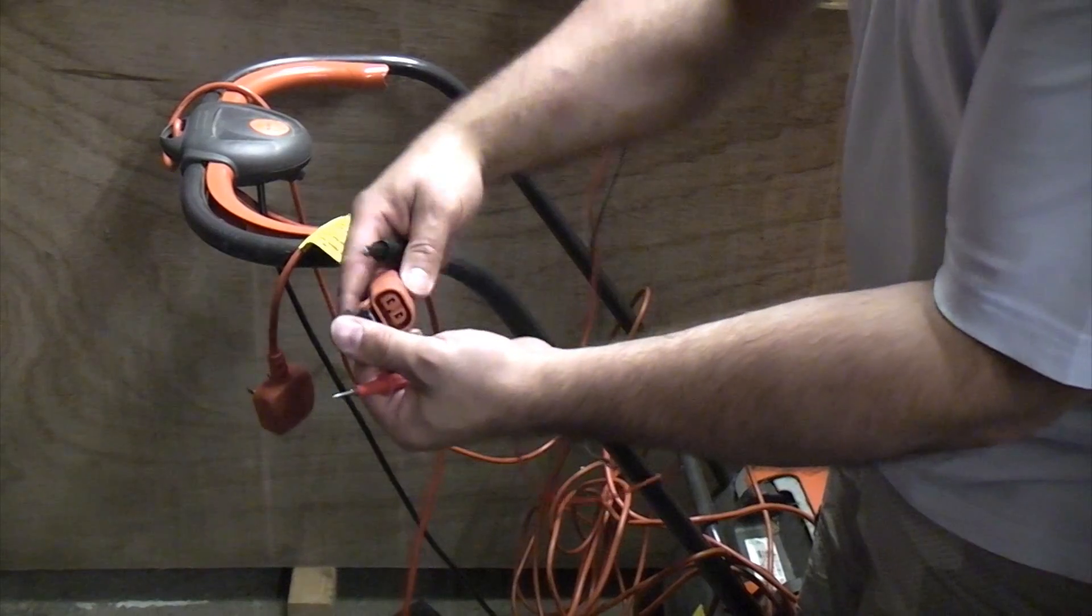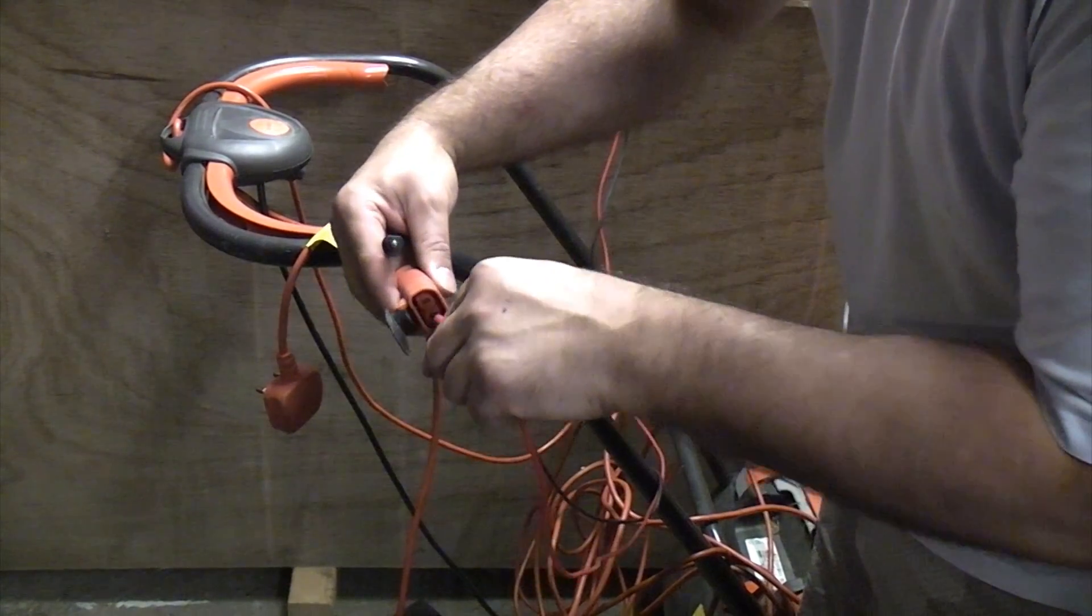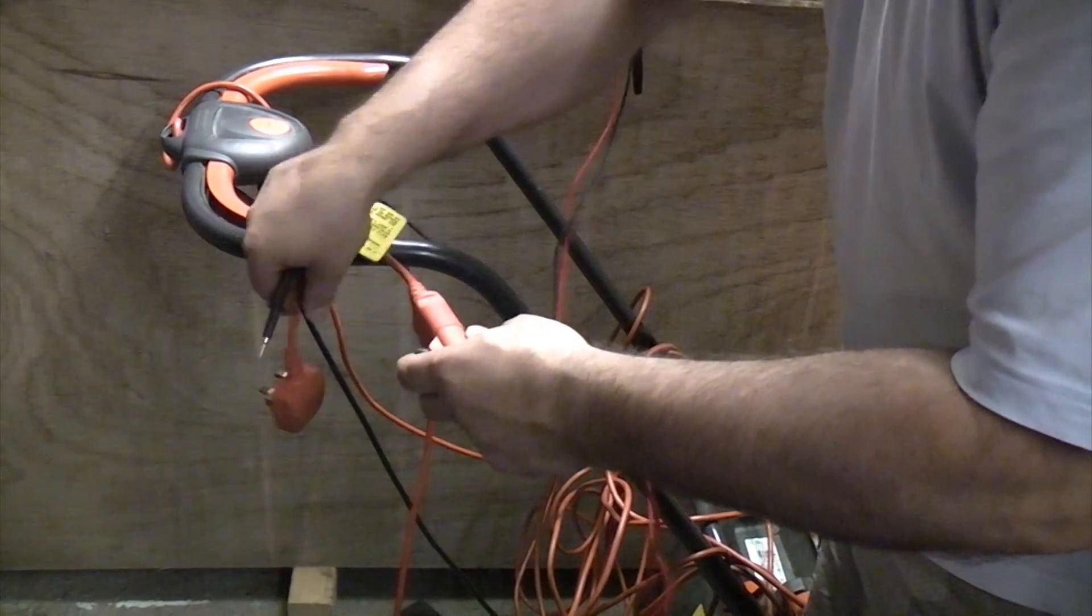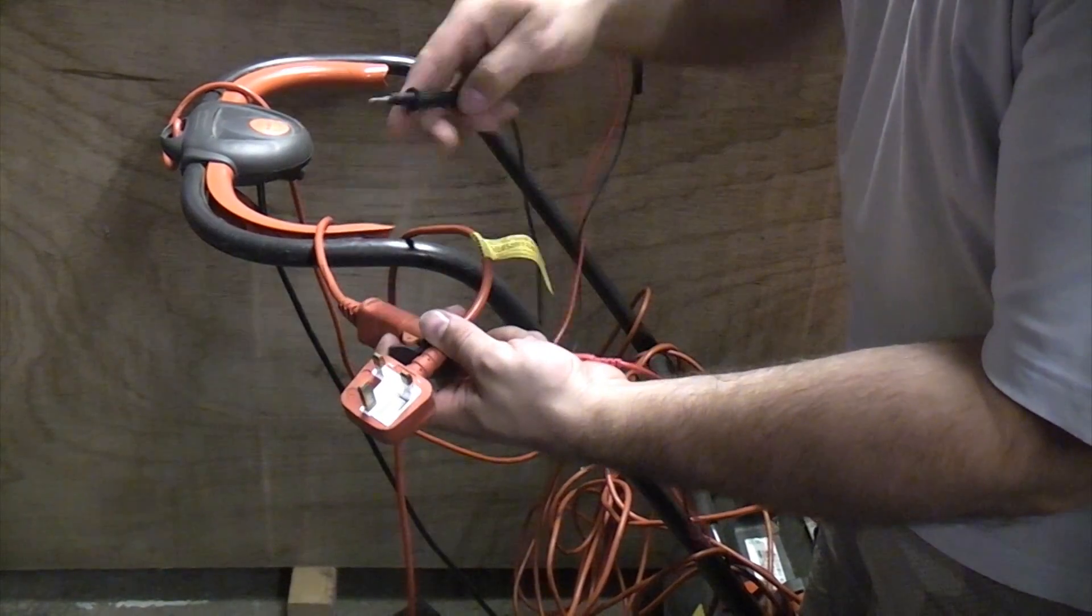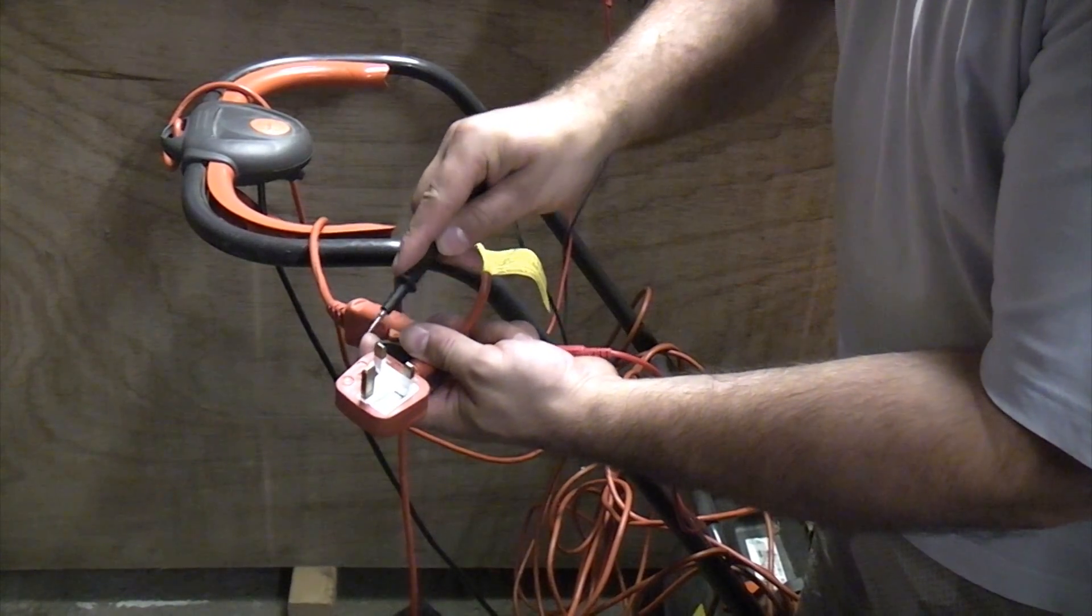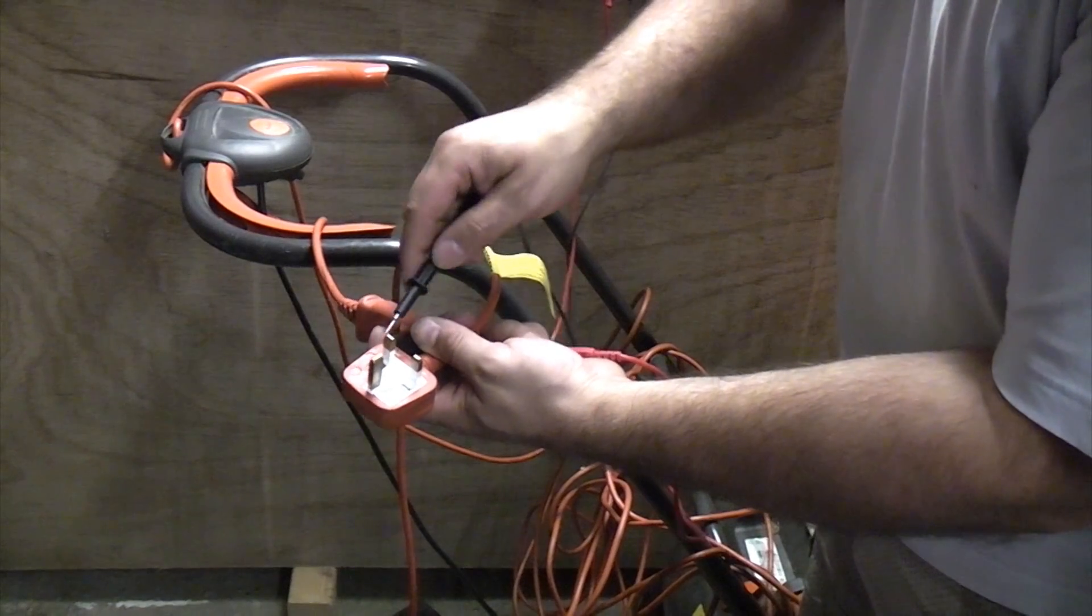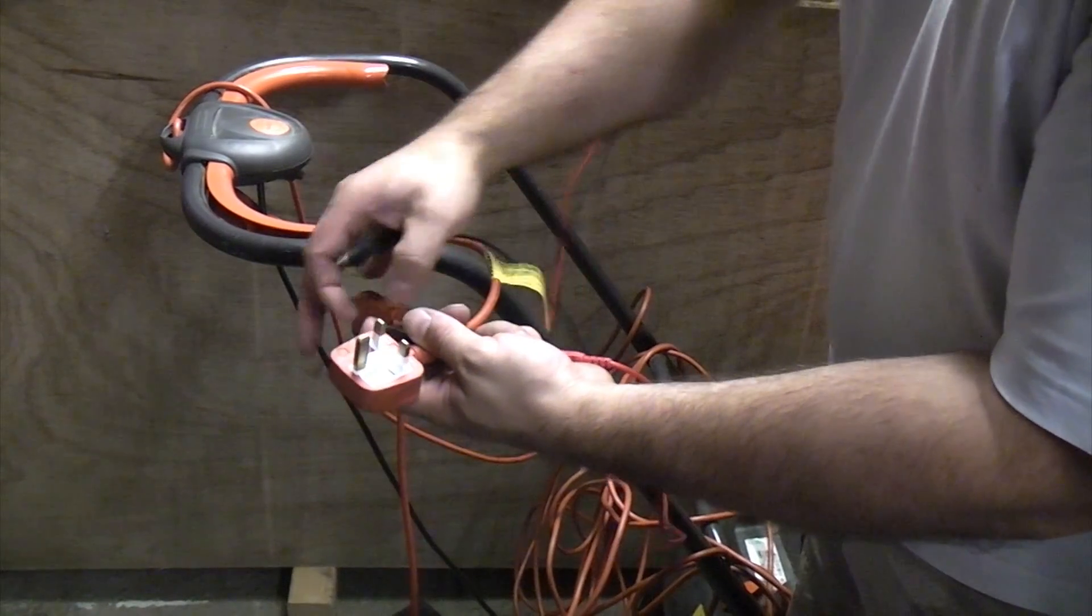So now I'm going to take the plug that goes into the actual lawnmower and I'm going to locate a probe in there, and then I'm going to take the plug that goes into the socket normally and I'm going to test. And you can see there that we've got continuity. So that's telling you that that bit of the circuit is working.